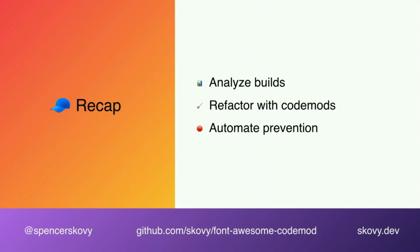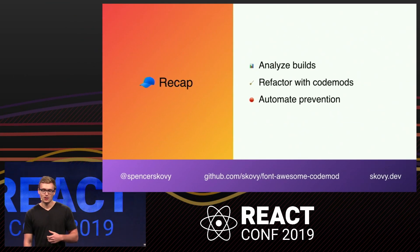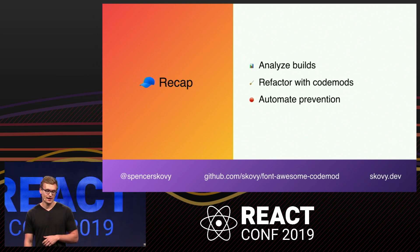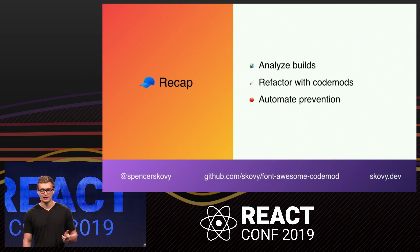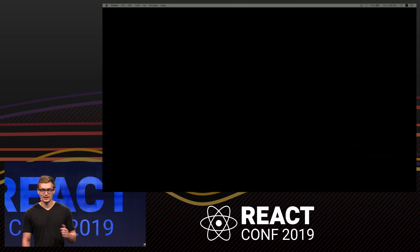A few quick lessons: make sure to analyze and know what's in your bundle and inspect anything that might be too large. Consider a code mod if you need to make a large-scale mechanical refactor with a well-defined set of rules. Think about ways to prevent this, such as a Webpack performance budget. The full code mod handling all edge cases is available on GitHub, and much of this content can be found in blog post format on my personal blog scoby.dev.